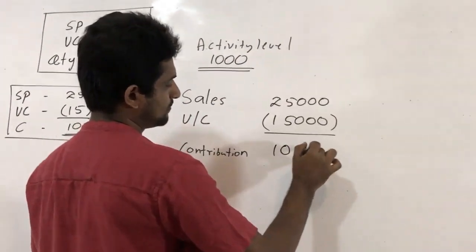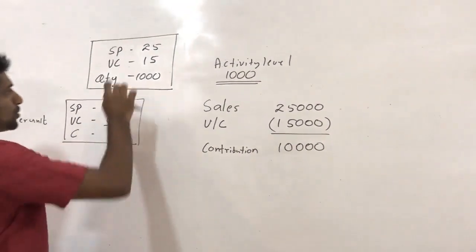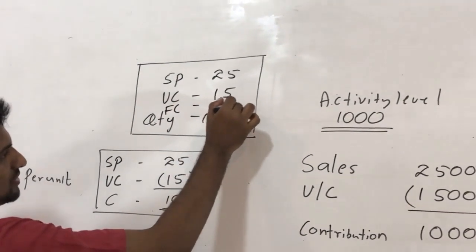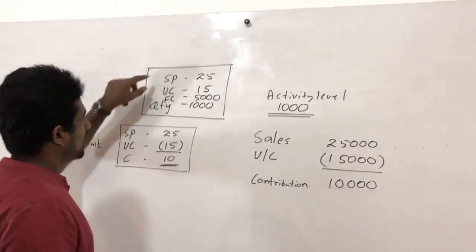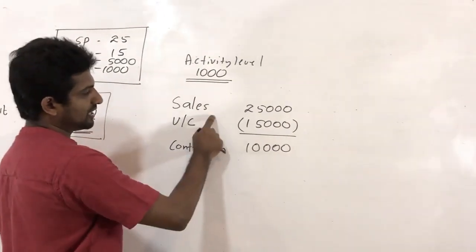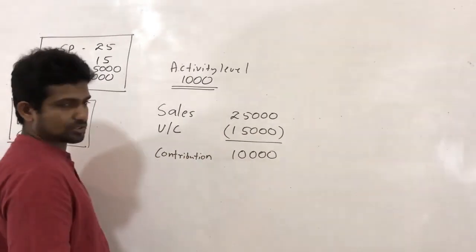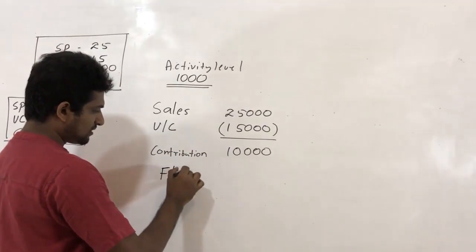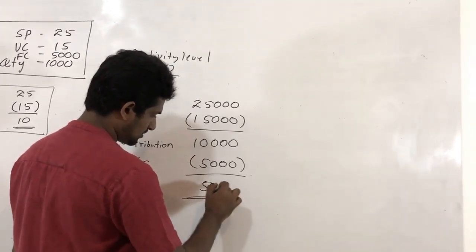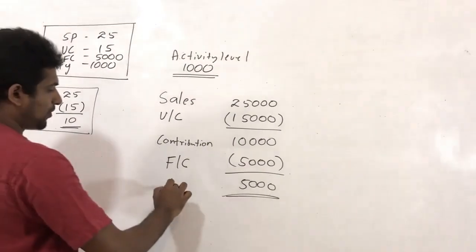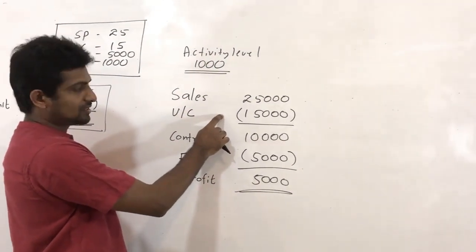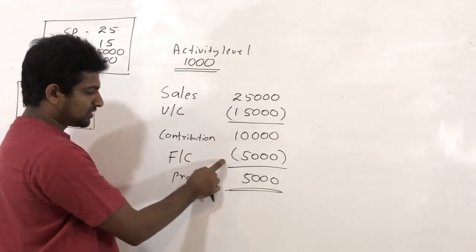The contribution is 10,000. I forgot to include one piece of information in the example — the fixed cost. I apologize for that. Please take the fixed cost as 5,000. So in the calculation: sales 25,000, variable cost 15,000, contribution 10,000, minus fixed cost 5,000, which gives the profit.